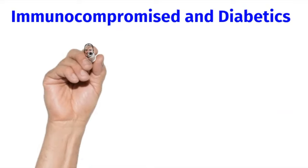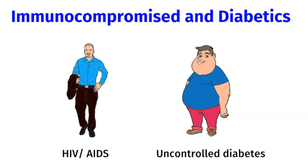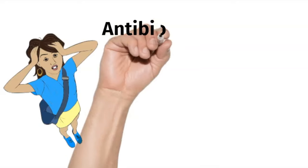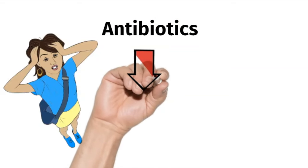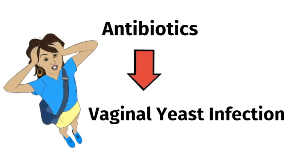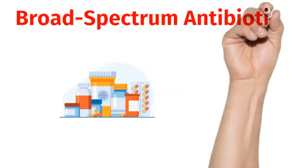Previously, yeast overgrowth was primarily seen in immunocompromised patients like those with HIV or AIDS, or those with high blood sugar from uncontrolled diabetes. But nowadays we see yeast overgrowth in people with normal immune systems who are not diabetic, often due to a side effect of antibiotics. Here we have a lady who took antibiotics for a urinary tract infection and three days later has a vaginal yeast infection. This is because the antibiotics not only killed the bad bacteria in the urinary tract, it also killed some of the vaginal lactobacillus — a good bacteria that normally inhibits yeast growth by lowering vaginal pH. So unfortunately, this is the downside to broad spectrum antibiotics.